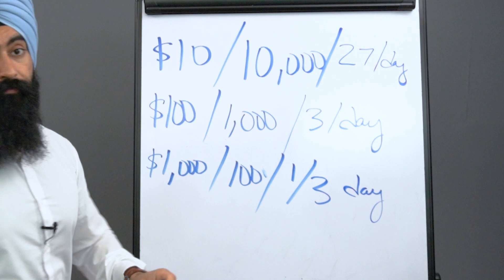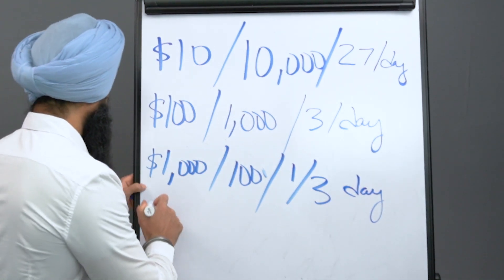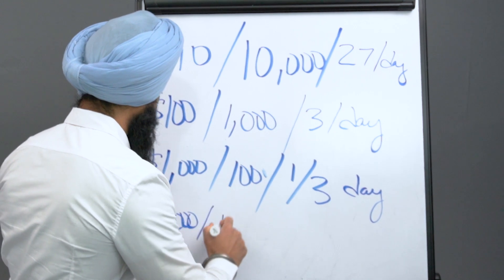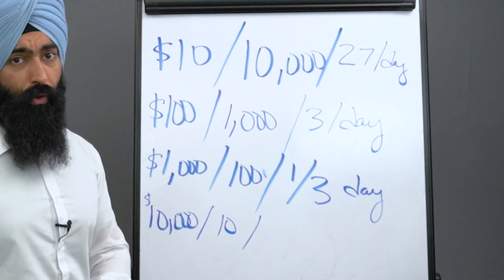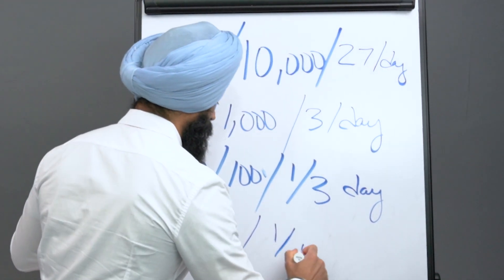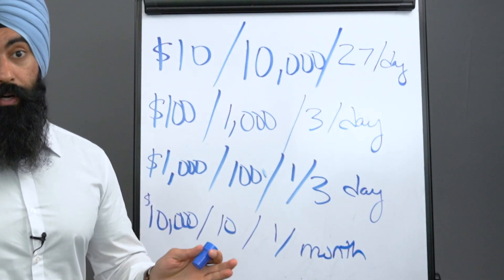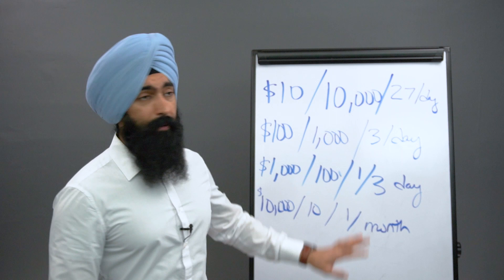And if you can sell something that makes you $10,000, now you only need to sell 10 of these, which means you only got to sell about one a month in order to hit that $100,000 goal in one year. This math is the easy part. Anybody can do this.